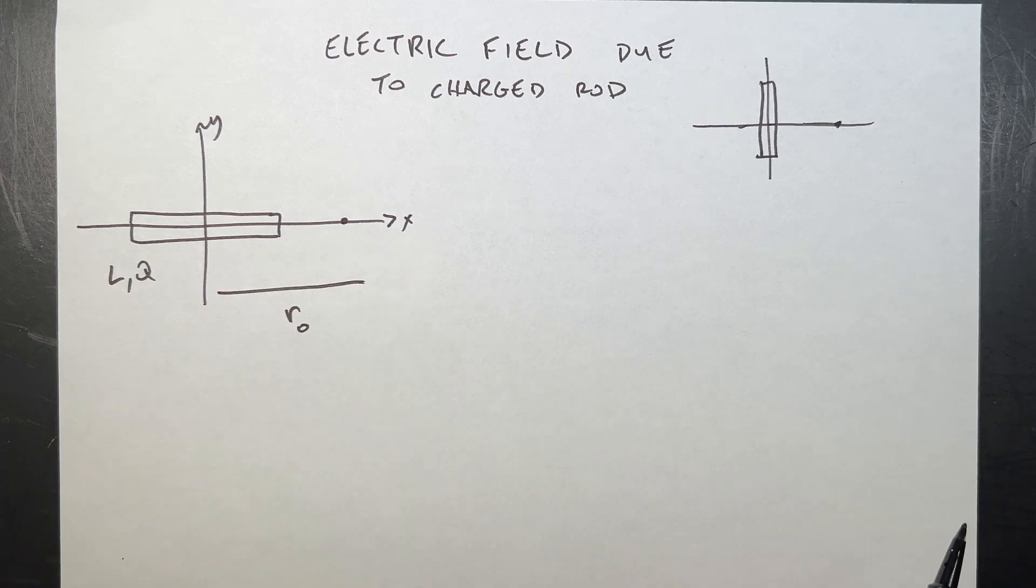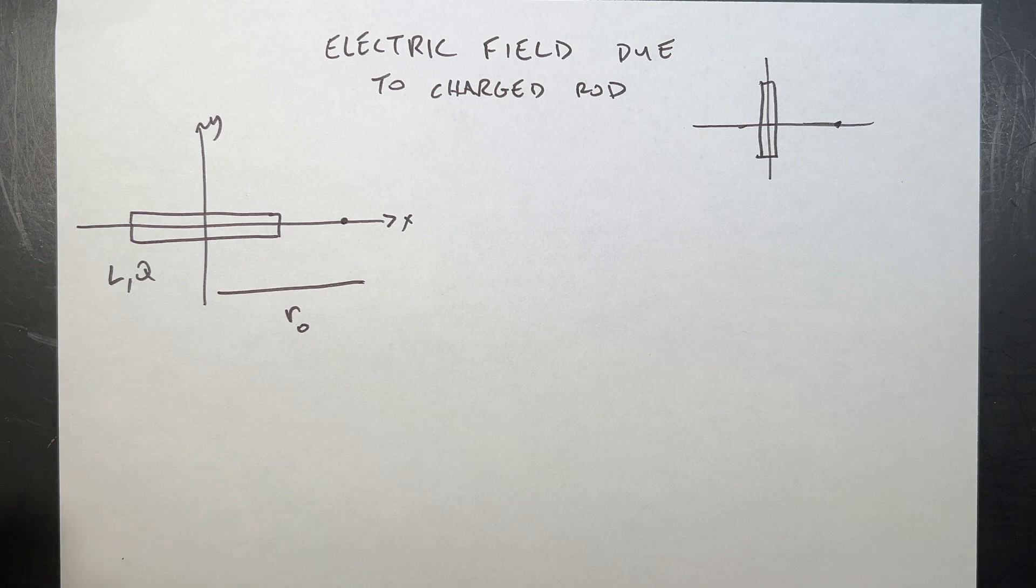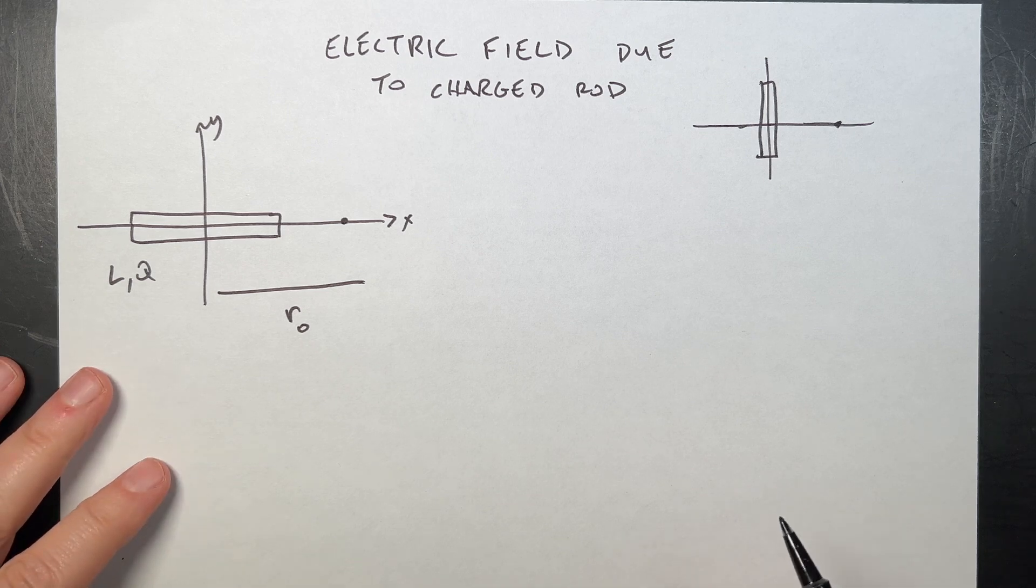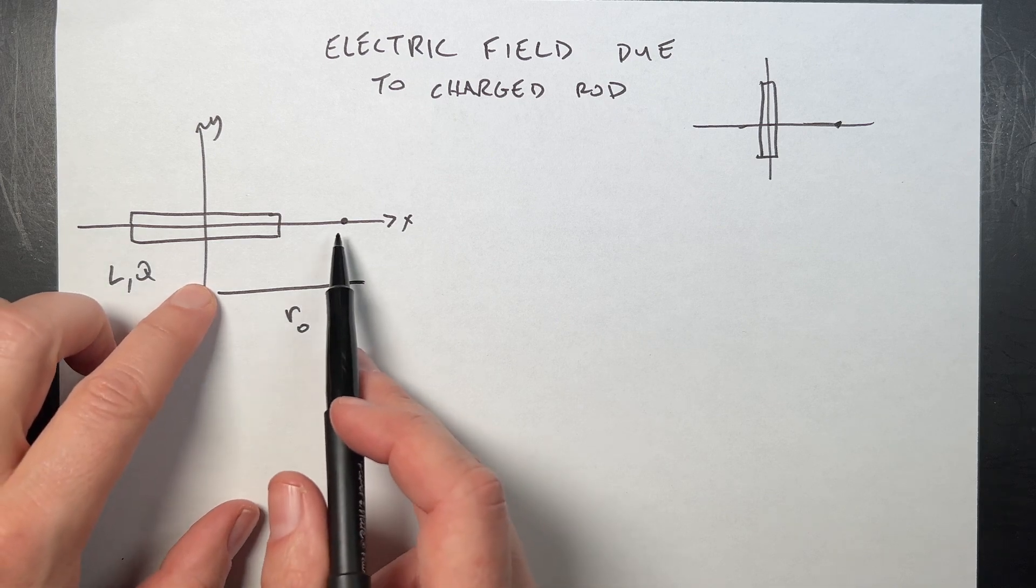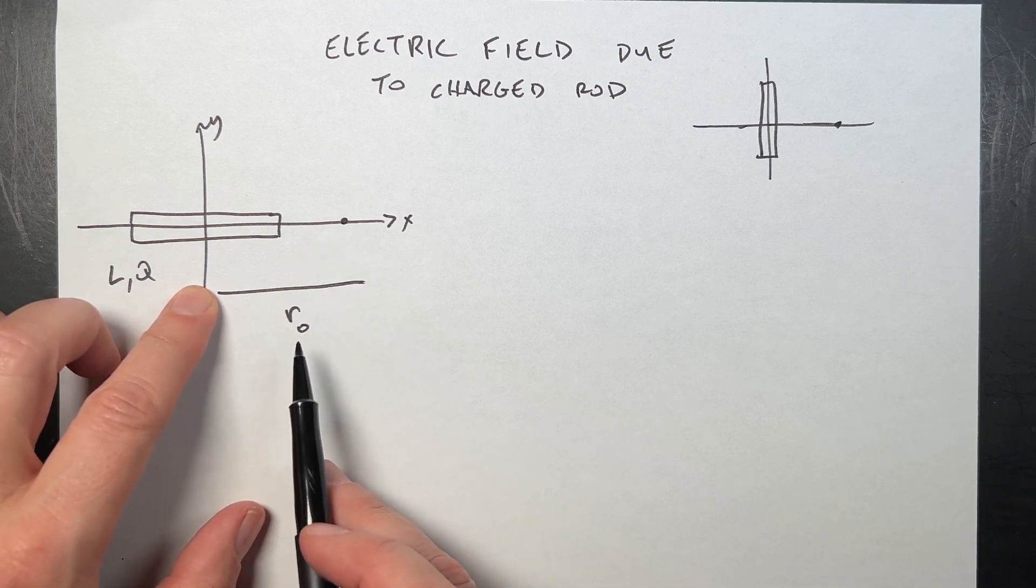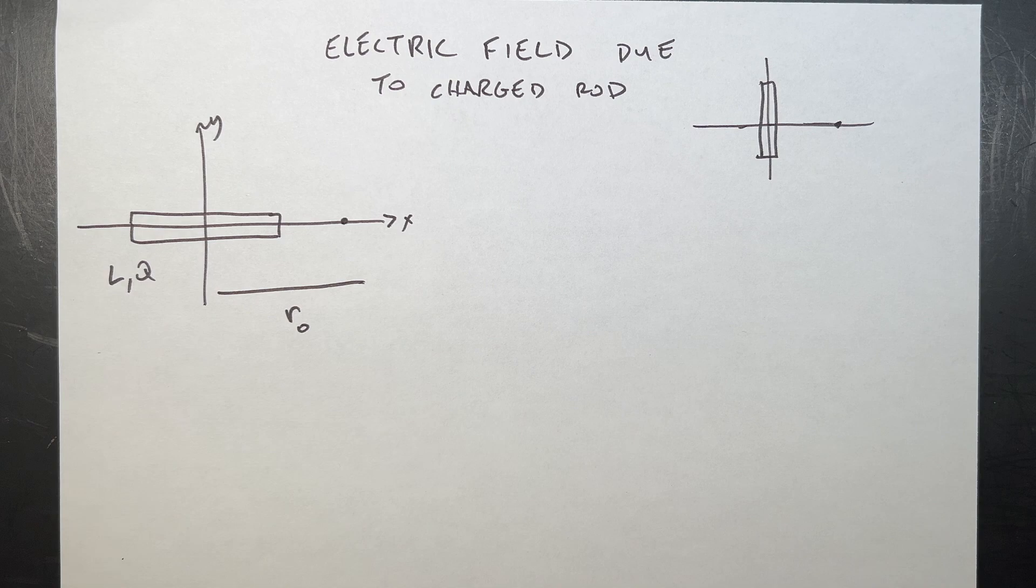So it's a great practice problem to look at how we calculate electric fields. In this case, I have the rod of length L, charge Q, and I'm on the x-axis distance r0 for observation location. Let's do this the formal way.